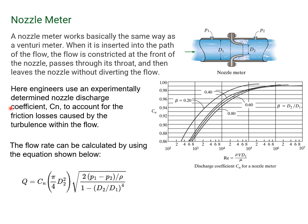Here, engineers use an experimentally determined nozzle discharge coefficient, CN, to account for the friction losses caused by the turbulence within the flow. Again, based on what Reynolds number you have, you come up and you come across and you get a CN value. This flow rate can be calculated using the equation shown below.